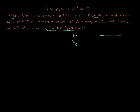On the timeline, we start at November 1st, Year 1, and go all the way out to 10 payments: November 1st Year 1, Year 2, Year 3, Year 4, Year 5, Year 6, Year 7, Year 8, Year 9, Year 10, and Year 11 — that's 10 total payments, all falling on that November 1st date.